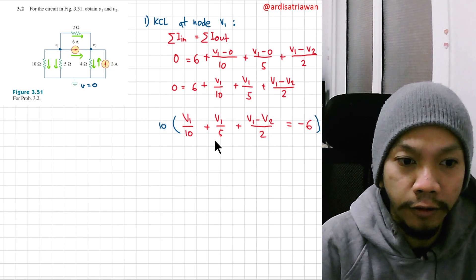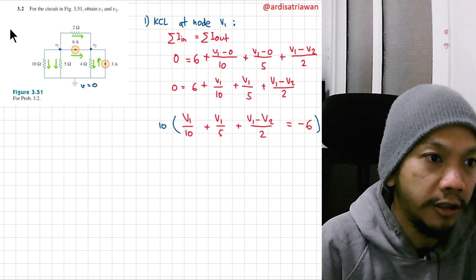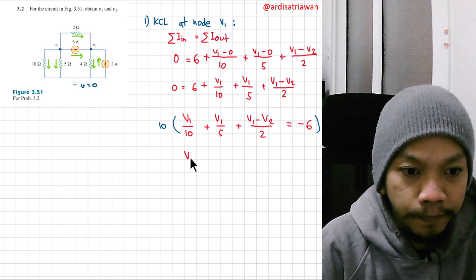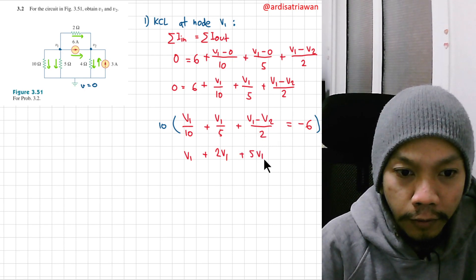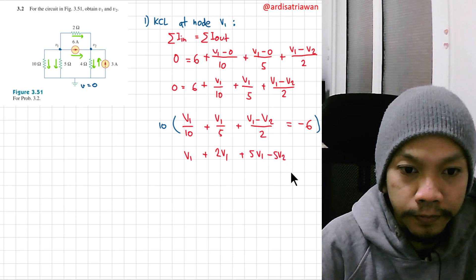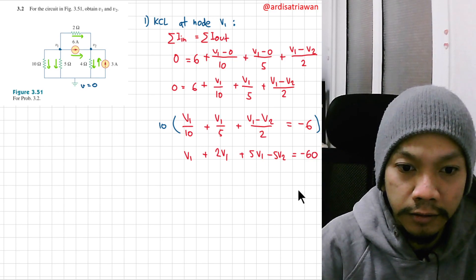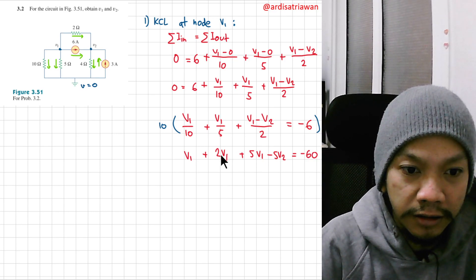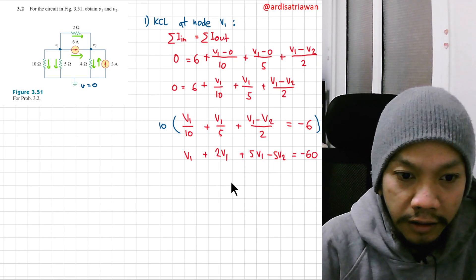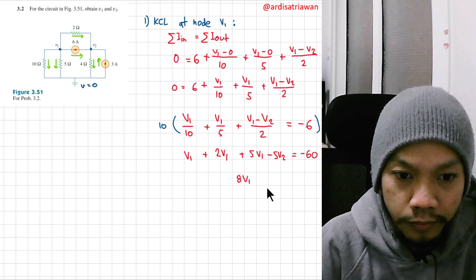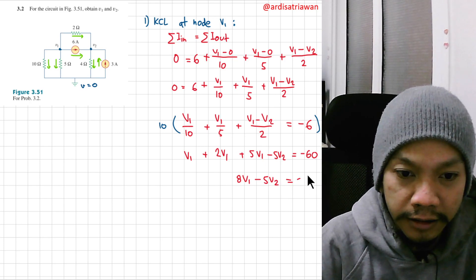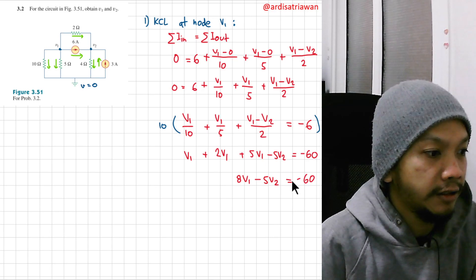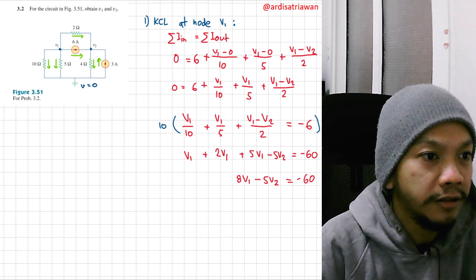After multiplying by 10: V1 + 2V1 + 5V1 minus 5V2 = minus 60. That gives us 8V1 minus 5V2 = minus 60. Let's save this as equation number one.